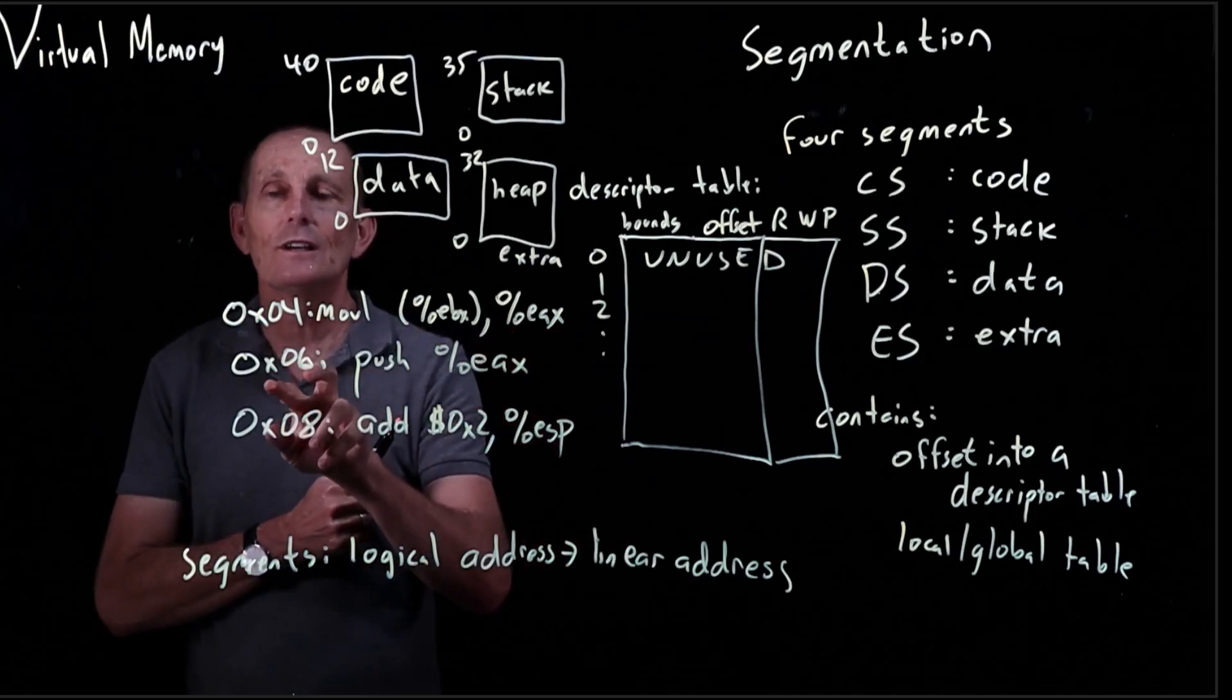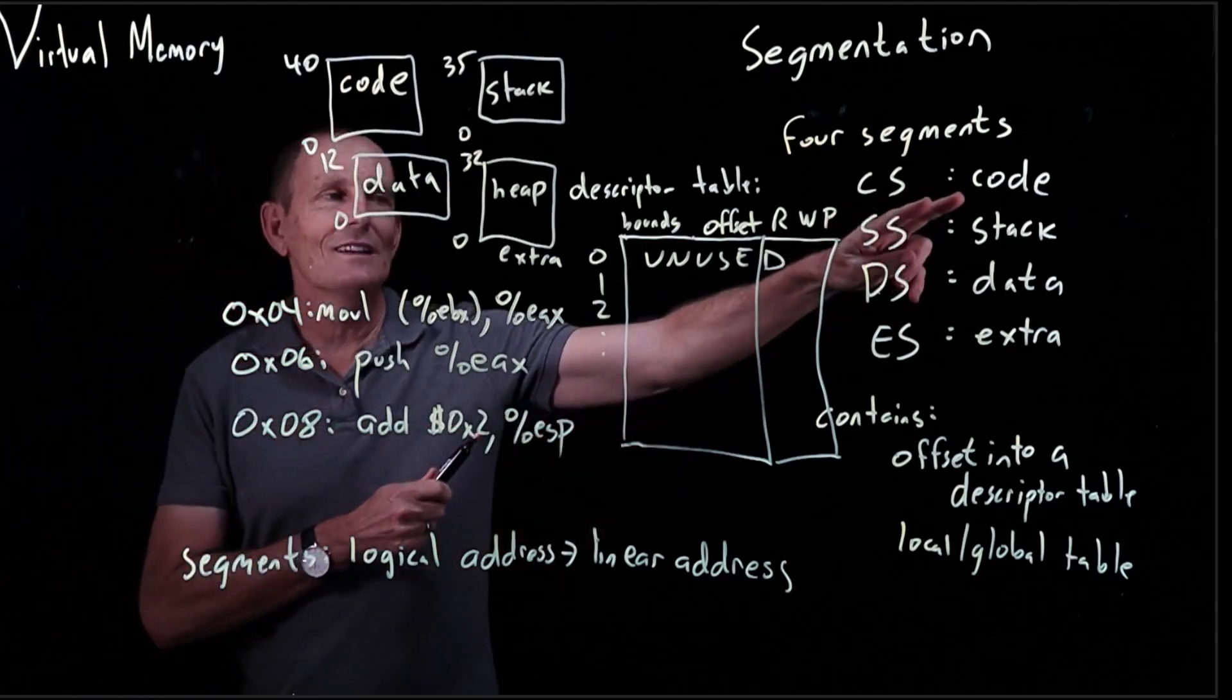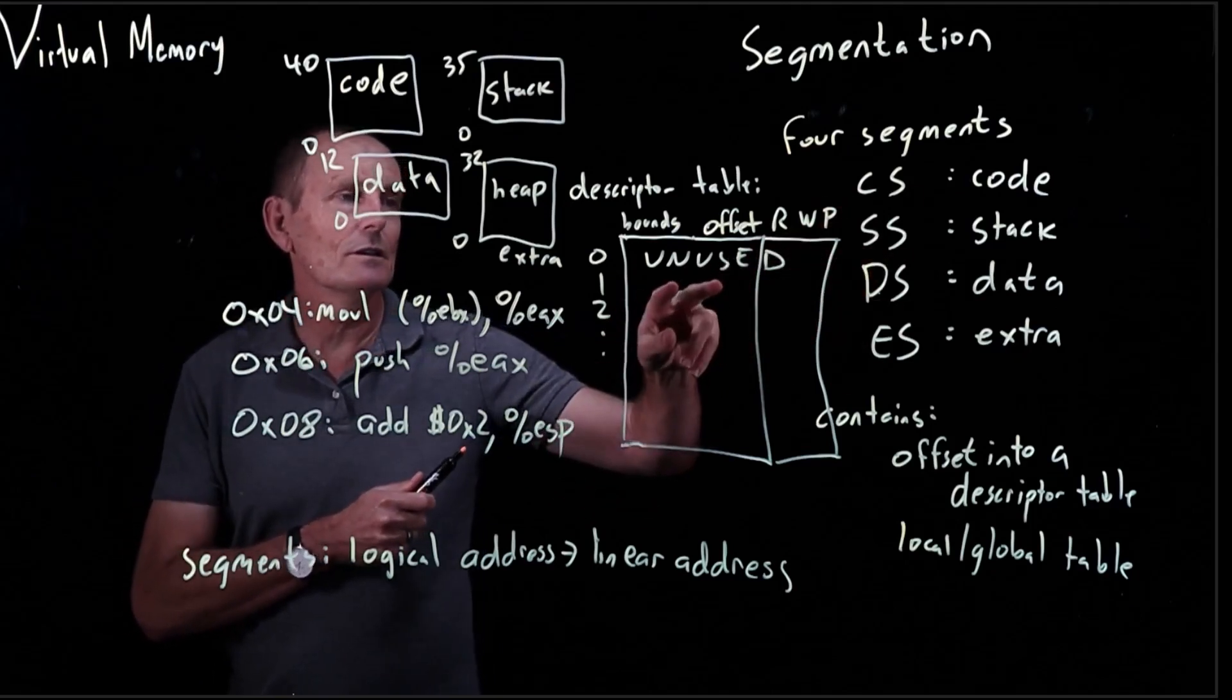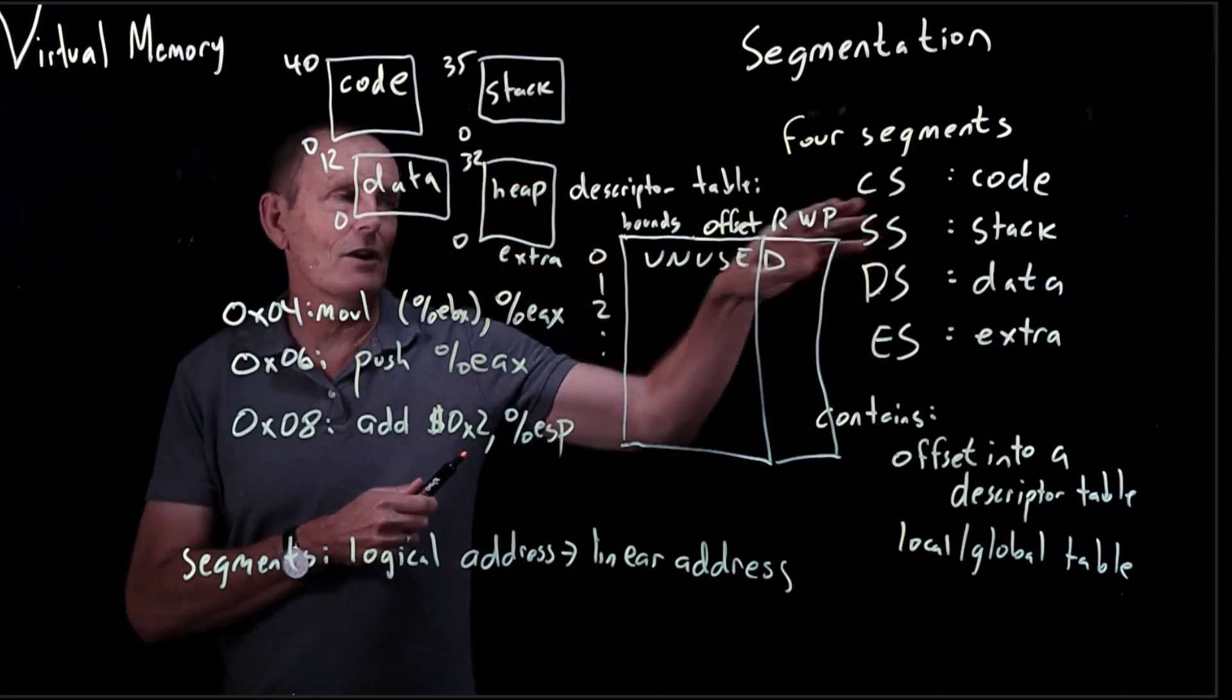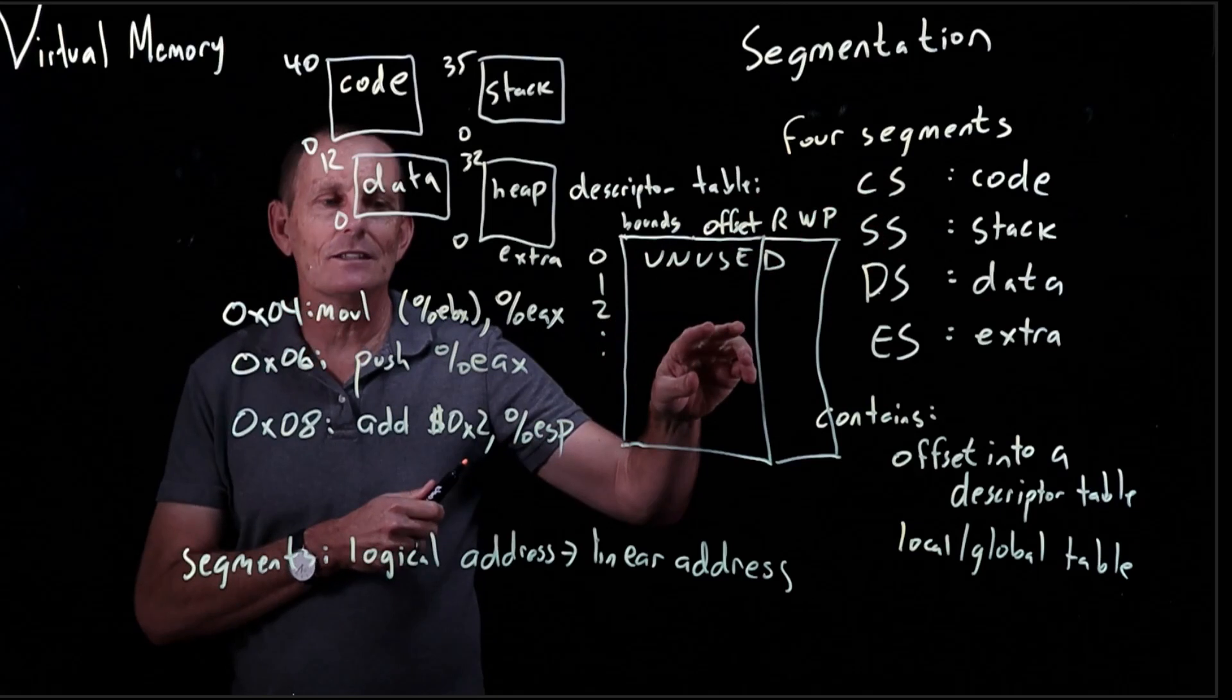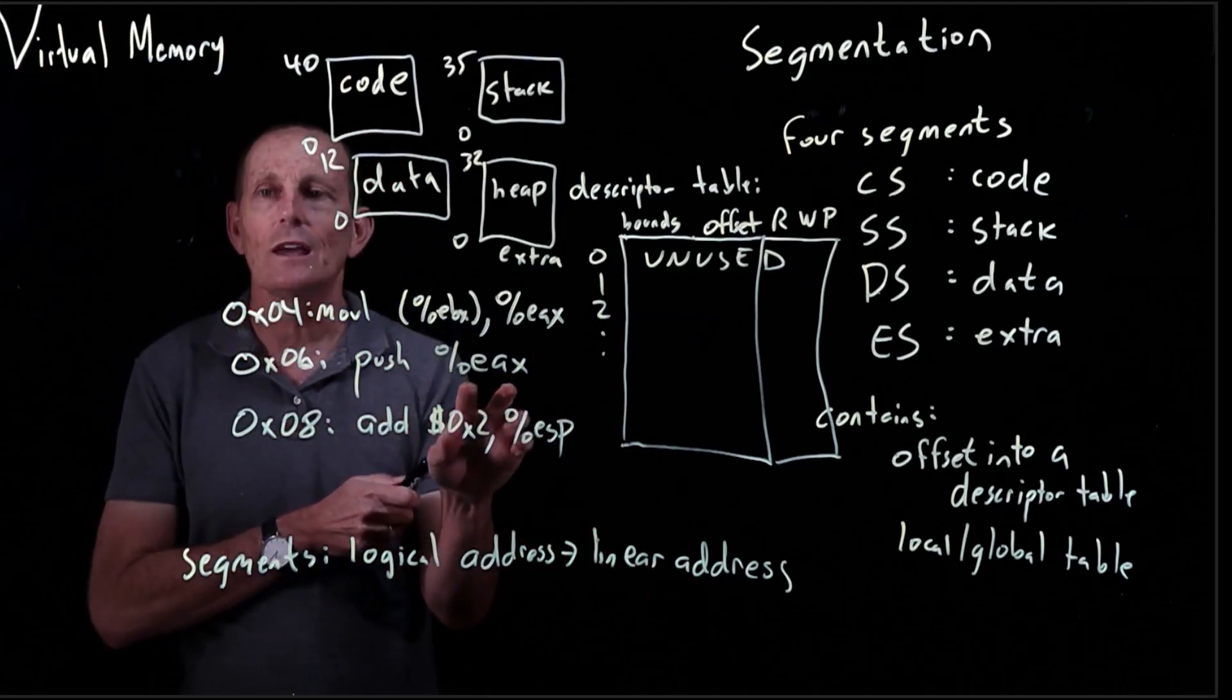Now we fetch another instruction. Same deal happens with 06. We're going to take 0x06, apply the code segment. The code segment is going to go to its particular offset, which could be the same or could be different from the other segments. In this case, we'll go to the code segment, do the bounds checking, add the offset, get the appropriate linear address, go to memory, and get the instruction. Now we push EAX.